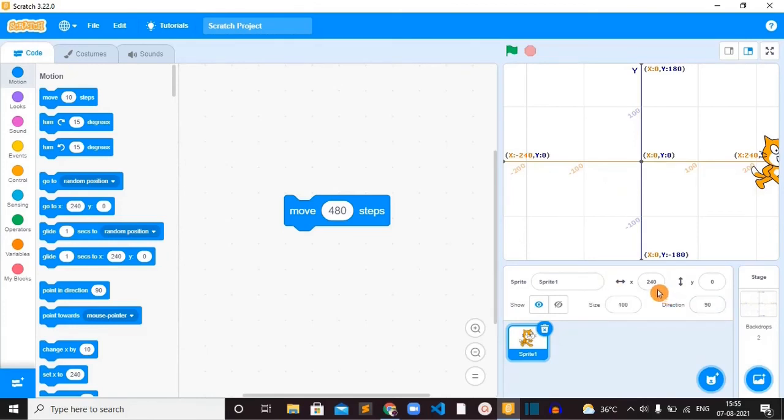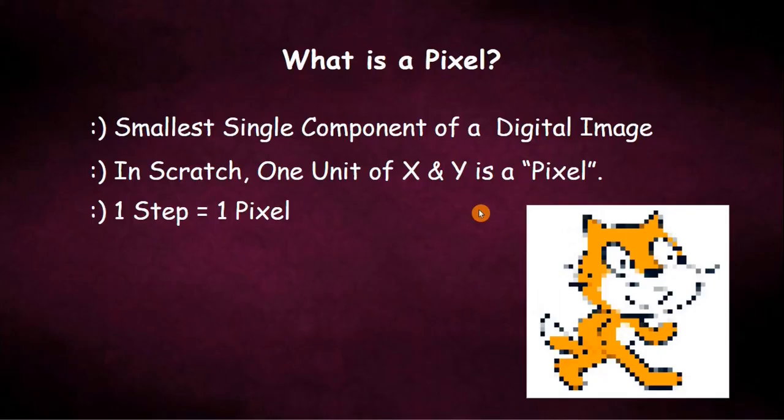Once we run this you can see the cat in the rightmost value. And you can also notice that the x value is now positive. Actually we typed it as negative. Negative means left and positive means right. This is the formula one step is equal to one pixel. So that's it all about the coordinate system.